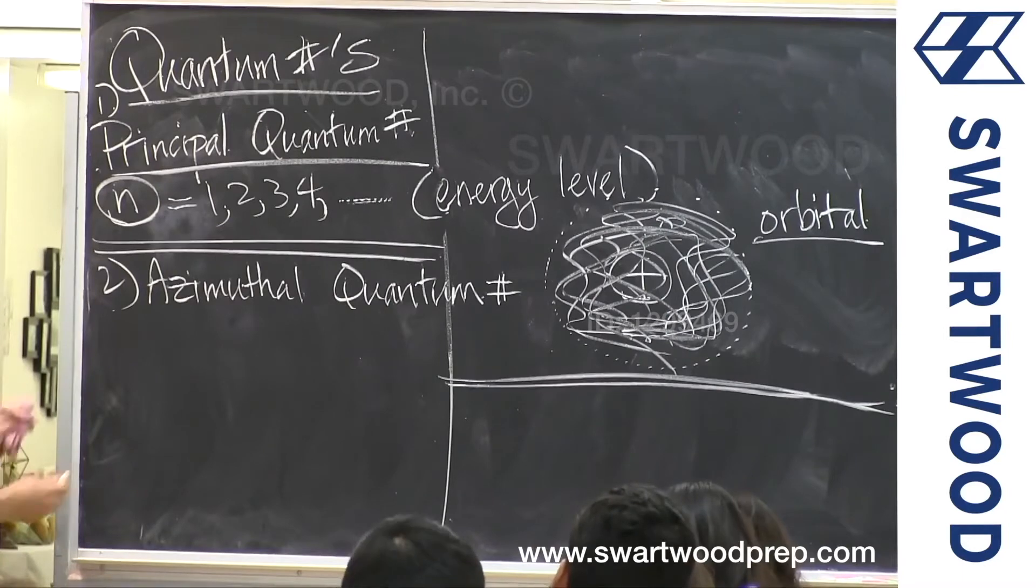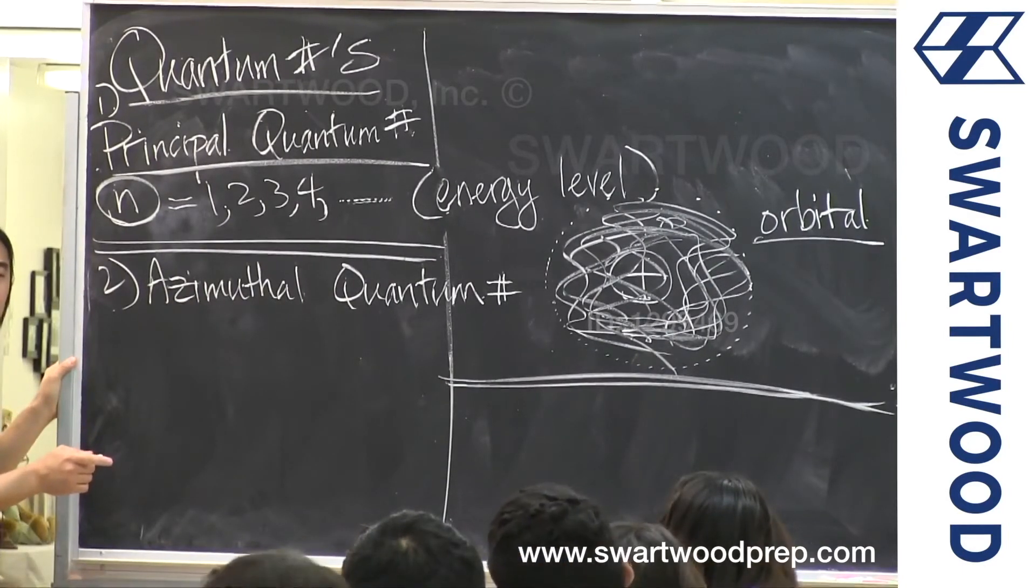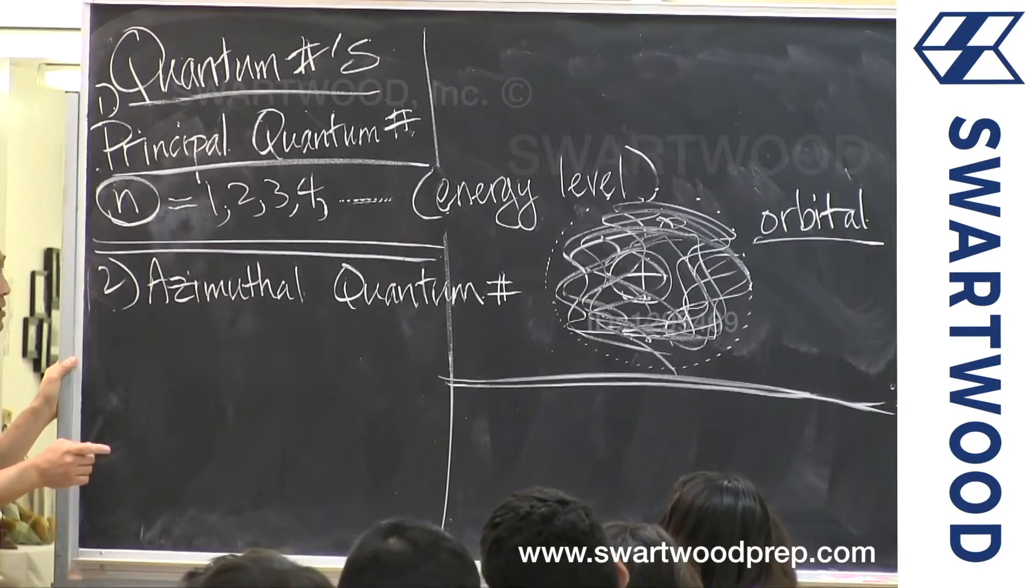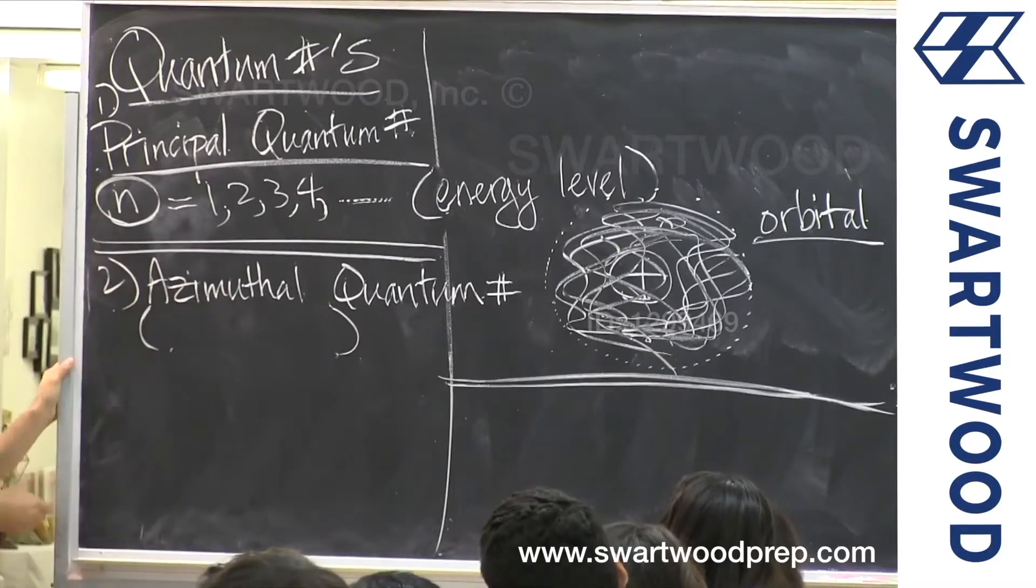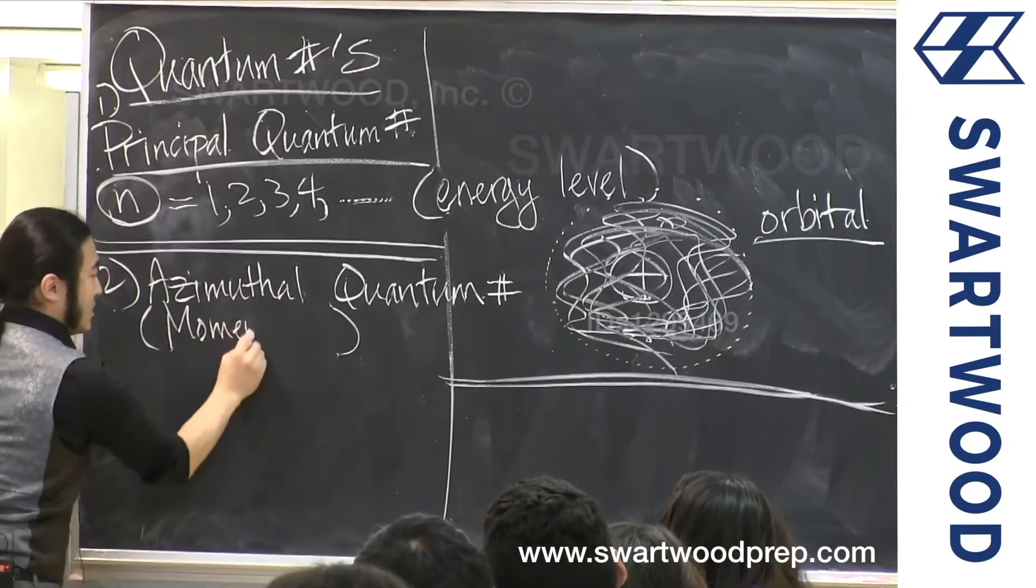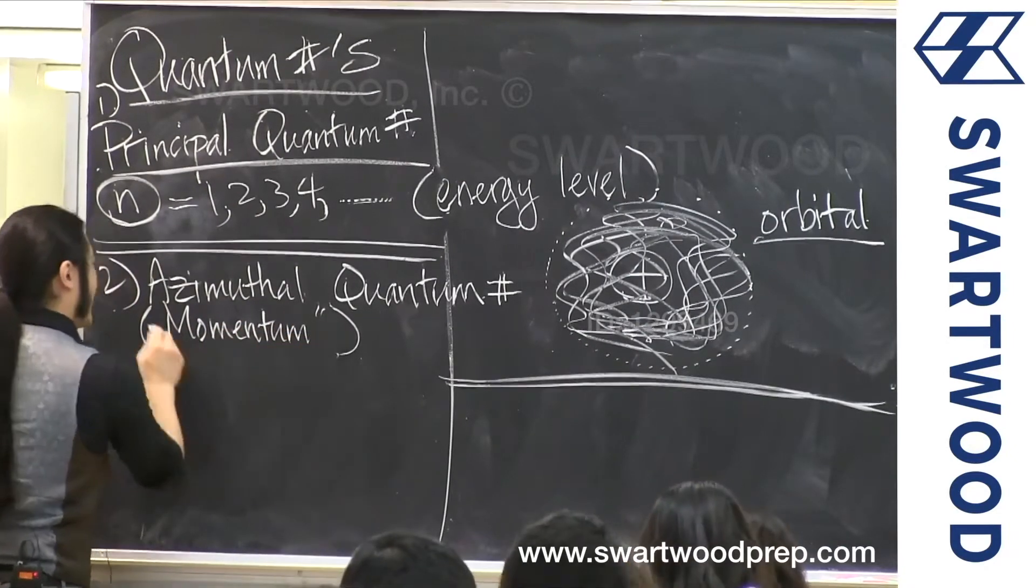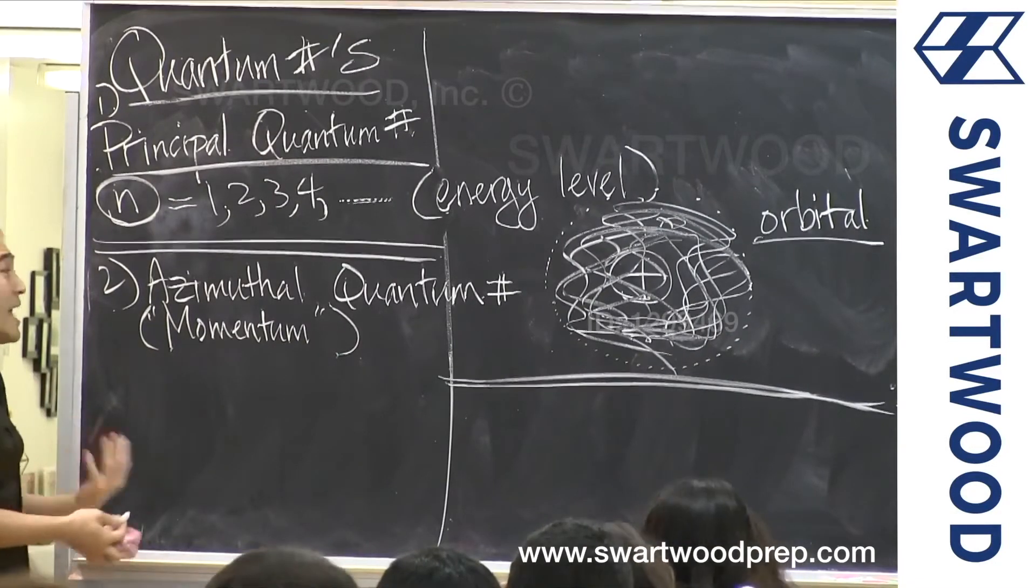So azimuthal quantum number. Do you remember the other name for this? It's not the M guy yet, but another term. Do you remember there's another term roughly connected to this guy? Not spin, but momentum. So I'm not going to give you the full name, but just think in your head. You might see the term momentum connected with that. It's connected to angular momentum.